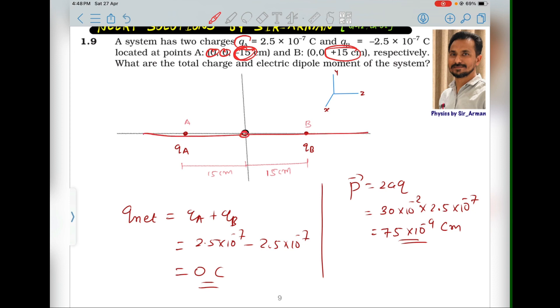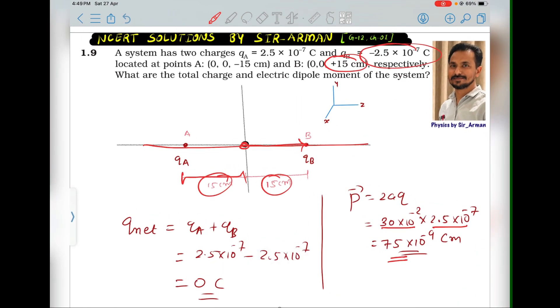From the center, the positive charge is located at distance -15 cm. Here it is -15 centimeter. Similarly, the negative charge is located from the center towards right, +15 centimeter. So the separation between the charges is 15 + 15 = 30 centimeter, and the magnitude of one charge is 2.5×10^-7 coulomb. If you multiply, you will get 75×10^-19 coulomb meter, which is the magnitude of dipole moment.